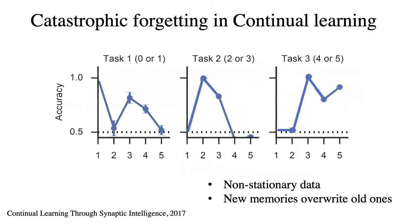The biggest challenge in continual learning is the catastrophic forgetting problem. As shown in this figure, there are five tasks. The accuracy of task 1 is close to 1 when we train the model on the first task. However, it suddenly drops to 0.5 when we train the second task. Similarly, the performance of the second task drops when we train the third task.